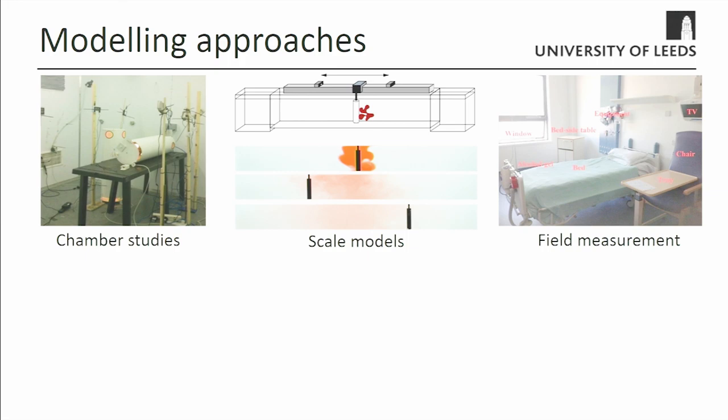We can also move to scale models. Here is a water analog where water represents the air, and you can use a dye tracer to visualize what's happening. This is a simple one done by one of my students, where a little cylinder moves up and down — the tank represents a corridor and the cylinder represents people walking up and down that corridor and how they might disperse a contaminant. Anyone who has ever walked down a corridor behind somebody who's smoking and gets a big slug of it will understand a little bit like that.